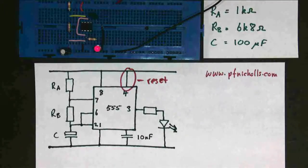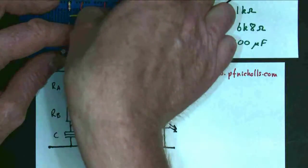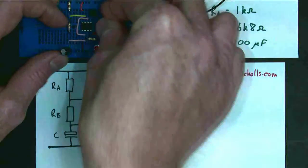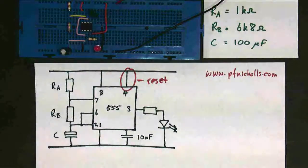But it's very bad practice to have an input not connected. So we should always make sure that if it's not connected to ground, then it is connected to positive, like that. So that's our enable input, and that can be used to control the A-stable.